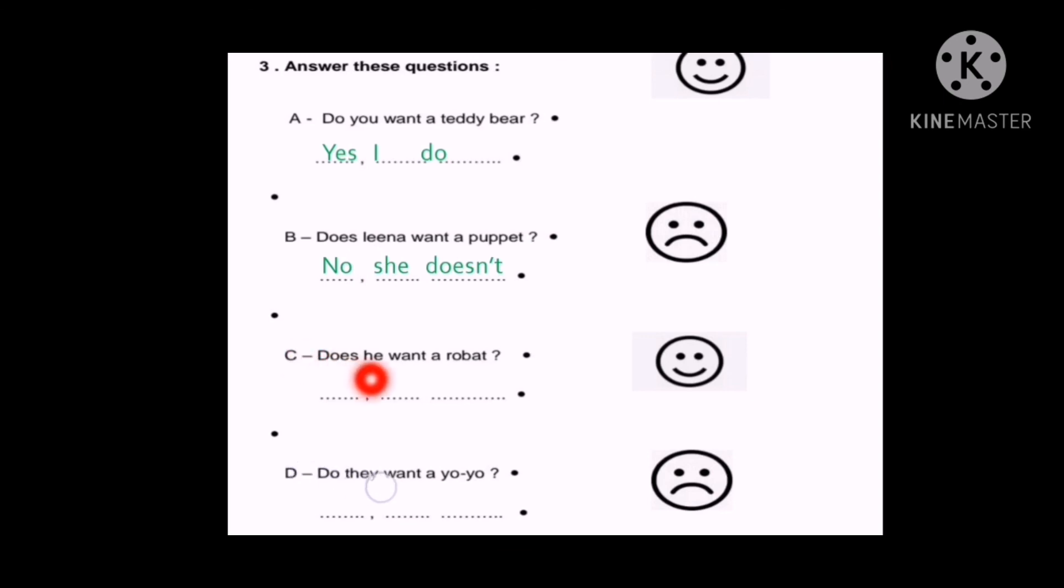C: Does he want a puppet? Yes. Yes he does, because here we have a happy face. So yes he does. The last one: Do they want a yo-yo? Sad face. So no they don't. So happy face? Yes. Sad face? No. Perfect.